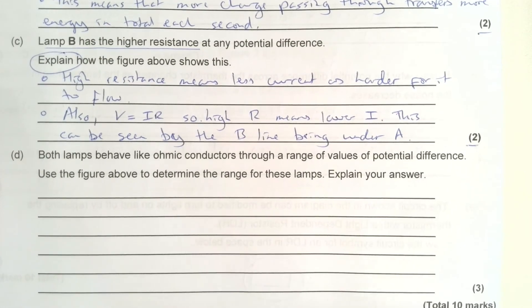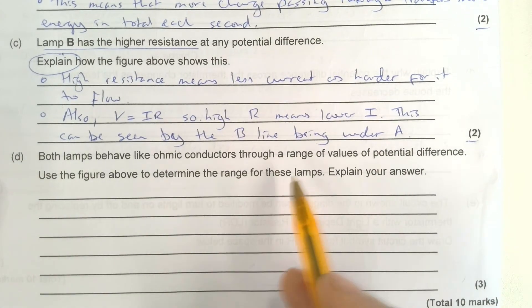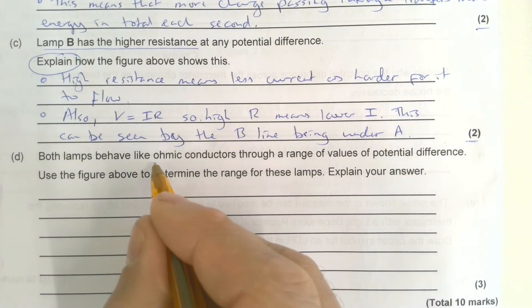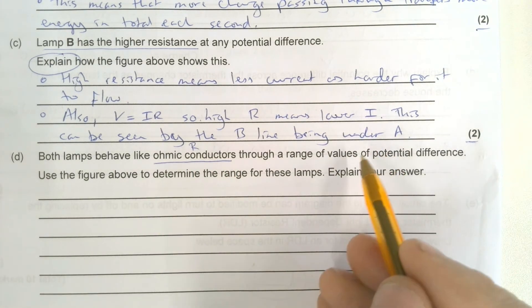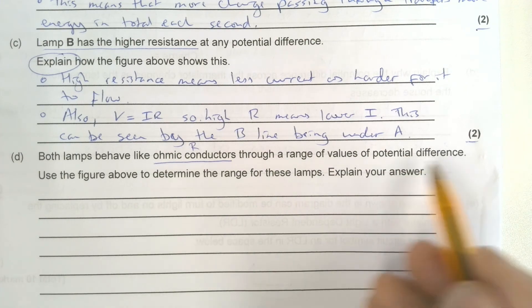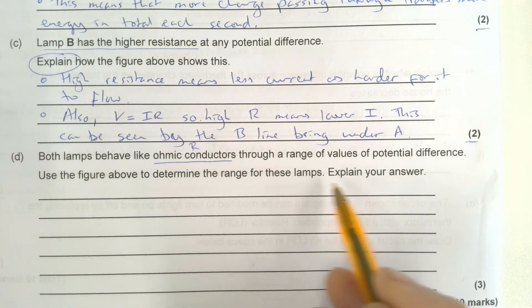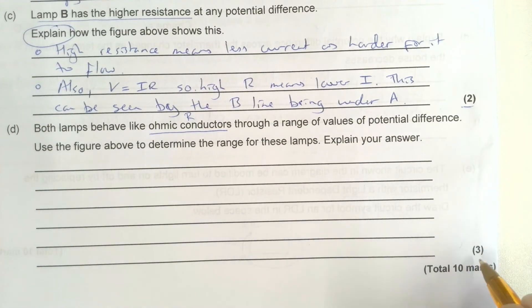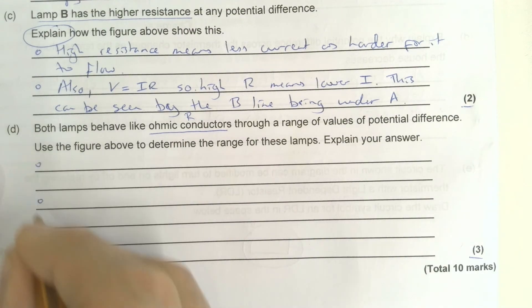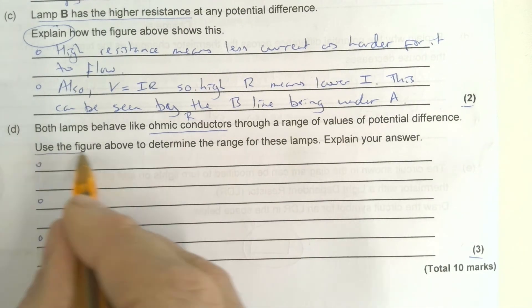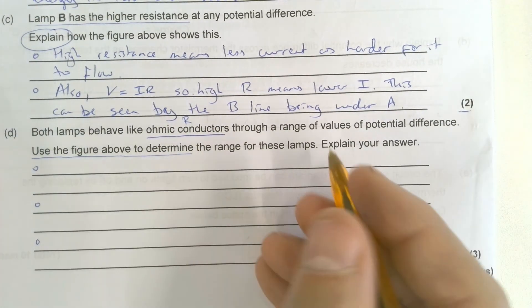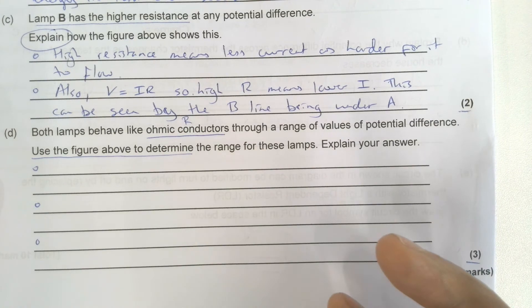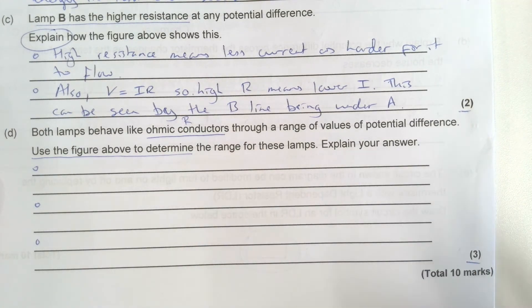Question D: Both lamps behave like ohmic conductors through a range of values of potential difference. Use the figure above to determine the range for these lamps. Explain your answer. It's worth three marks. Let's think about what we know. First of all, a fixed resistor means that if potential difference doubles, the current doubles.